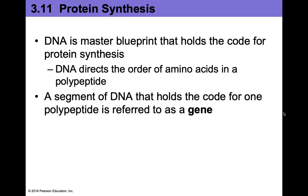DNA is our master blueprint — it is the secret to making you, the recipe to make everything in your body. We get all of our information for how to make a protein from the information embedded within our DNA. The DNA directly codes for the mRNA that we create in transcription, which tells us the amino acids that are going to be part of our polypeptide. Poly means many; peptide is the bond between amino acids. Many amino acids strung together make a polypeptide, called a protein. A segment of DNA holds the code for one protein — that's one gene.